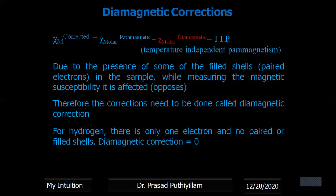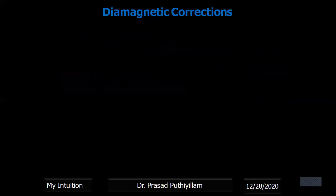For example, if we take hydrogen, hydrogen has got only one electron and that one electron is unpaired. Therefore, you can say there are no paired electrons in hydrogen. Therefore, diamagnetic correction can be taken as zero.